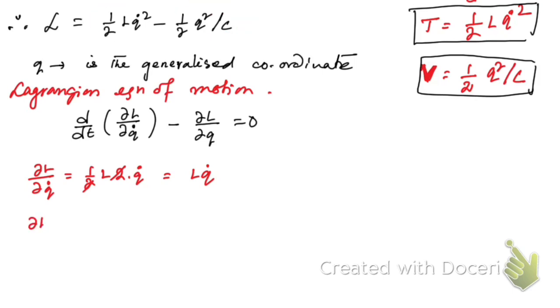Now ∂L/∂Q: this term doesn't contain Q, so its derivative is zero. Differentiating the other term gives -(1/2)·2Q/C, so the 2s cancel and we get ∂L/∂Q = -Q/C.